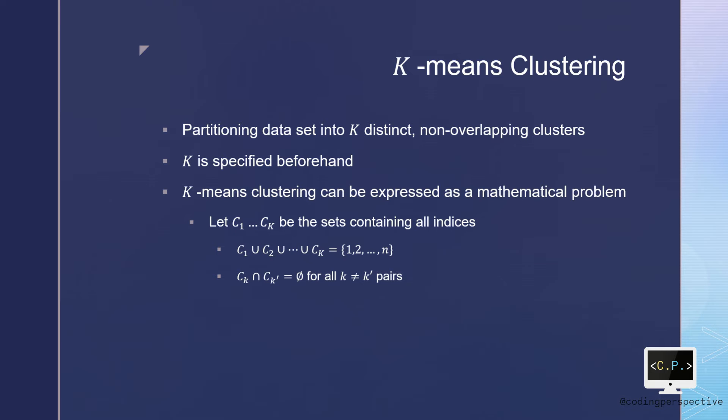Second, any intersection between CK and CK prime should be an empty set. In other words, the clusters are non-overlapping. No observation belongs to more than one cluster.